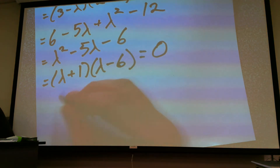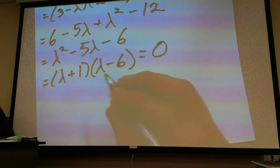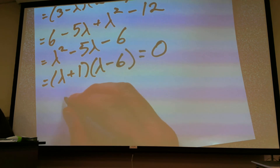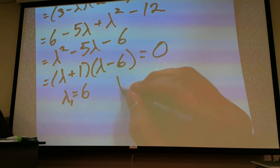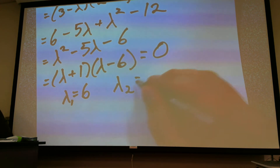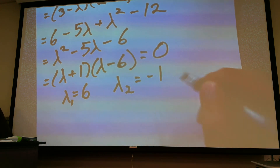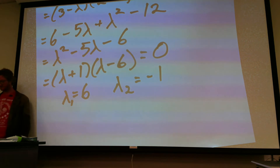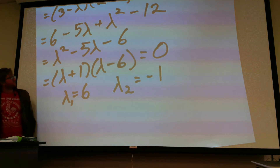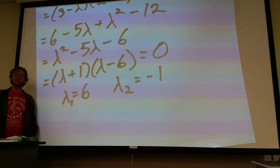So λ1 is going to equal 6, and λ2 equals negative 1. That's the first step of the problem — just finding the eigenvalues.